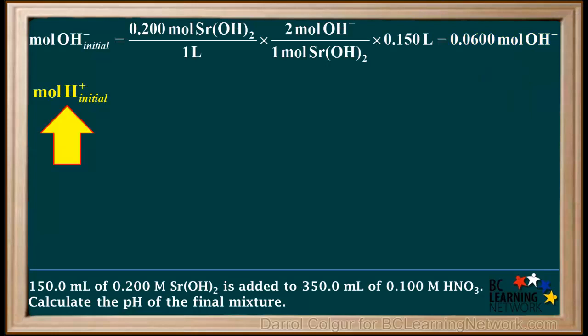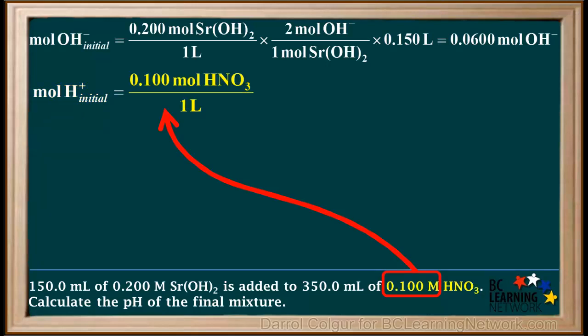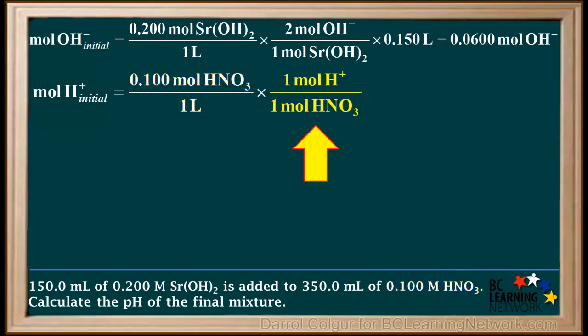Our next step is to calculate the initial moles of H⁺ added. The H⁺ comes from the strong acid nitric acid, or HNO₃. Each HNO₃ releases one proton. So we take 0.100 moles of HNO₃ per liter, times 1 mole of H⁺ per 1 mole of HNO₃, times 0.350 liters.